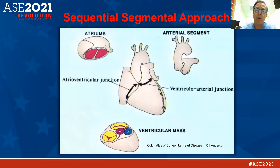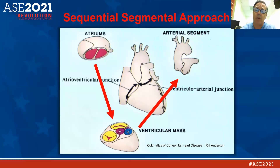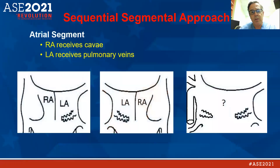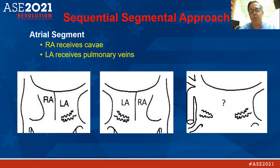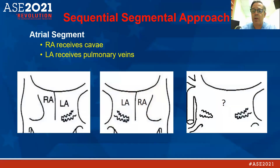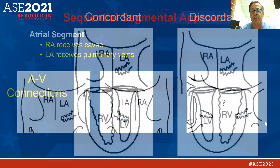The sequential segmental approach is just that — we put the heart together in segments. The atria connect to the ventricles, and the ventricles connect to the arteries, and we describe those connections as we see them. For the atrial segment, the atria receive the veins: the right atrium receives the superior and inferior cavae, and the left atrium receives the pulmonary veins. In mirror image dextrocardia, the LA is on the right and the RA is on the left. The panel showing atrial ambiguous represents heterotaxy, where there's a mixture of systemic and pulmonary venous drainage into a common atrium with bilateral left atrial appendages.